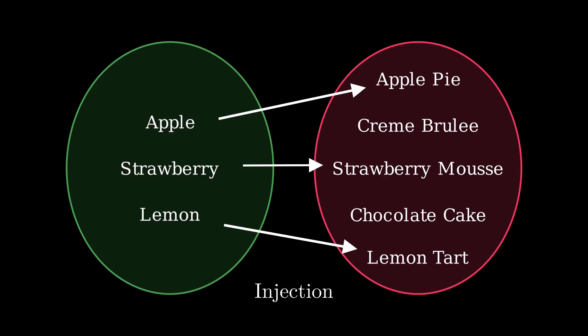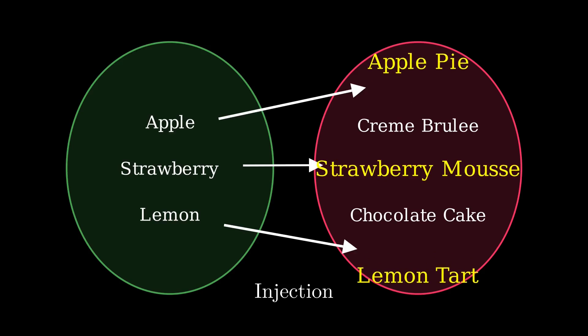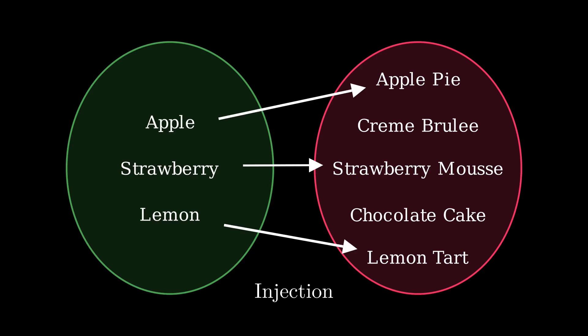We can prove that we have an injection by showing that every fruit maps to a dessert, and that given a dessert that was mapped to, we can figure out which fruit we started with. This in turn proves that the size of our fruit set is smaller than, or equal to, the size of our dessert set.